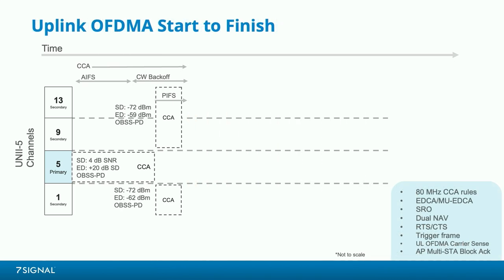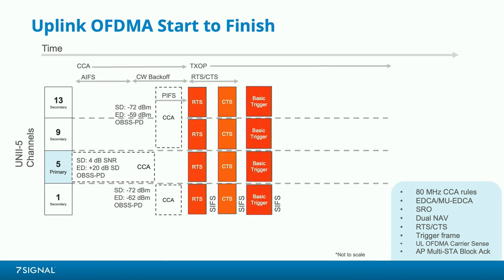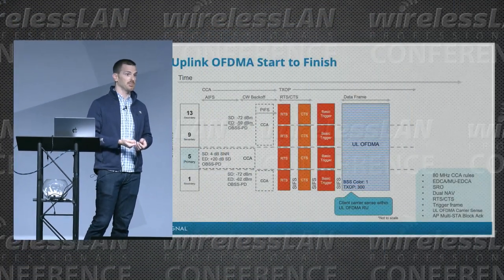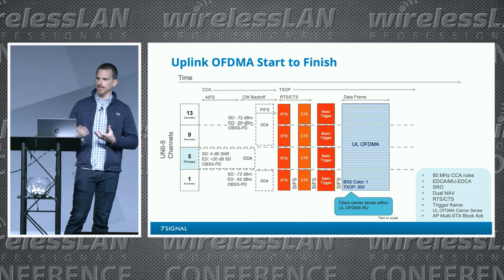Uplink OFDMA is probably the most complex part of 802.11ax. The AP has to win the channel even though clients are going to transmit simultaneously - it has to happen while the AP owns a TXOP. Using the same channel access and CCA as before, with RTS-CTS again, then something new happens: the AP sends a trigger frame. The most common format is the basic trigger, but there are other formats - beamforming request polling is common too. Then uplink OFDMA happens and all the clients transmit into their resource units. Before they do, they might be required to do carrier sense themselves.